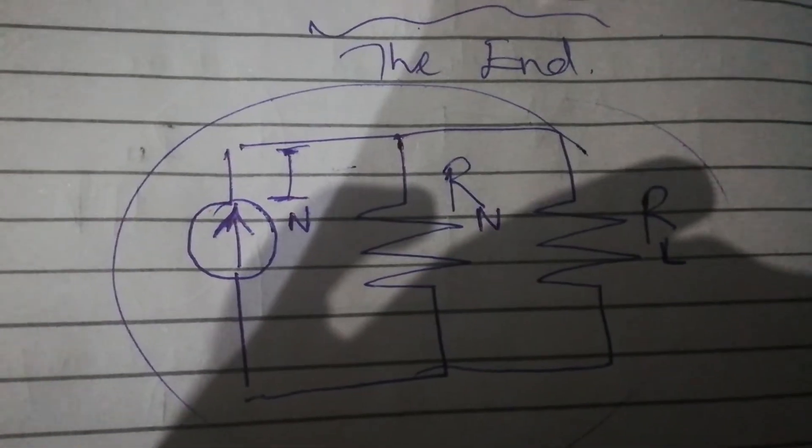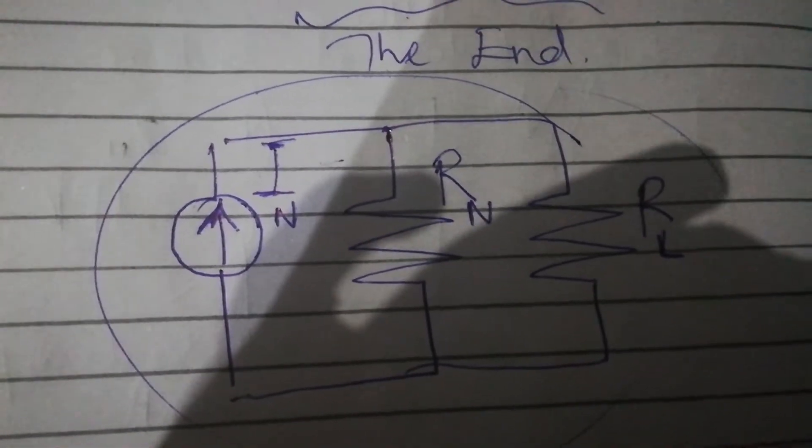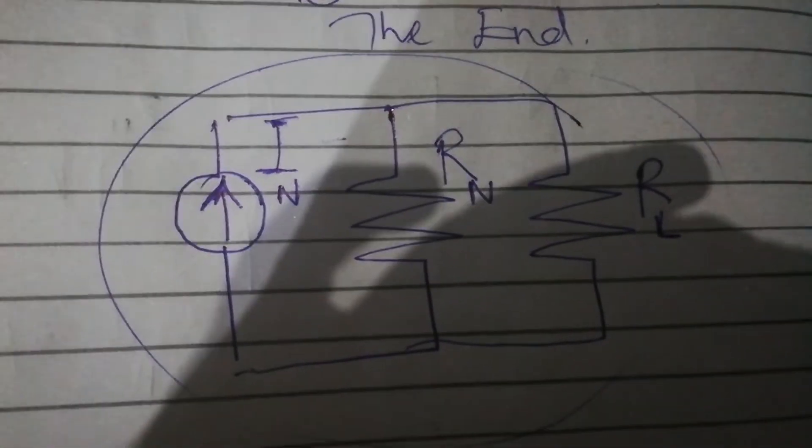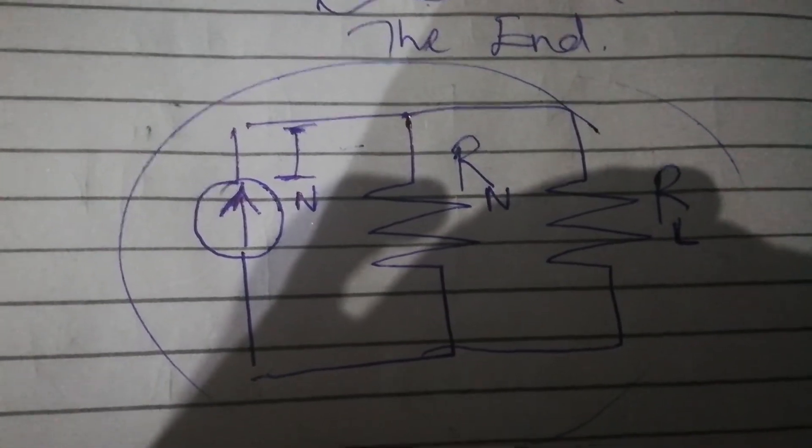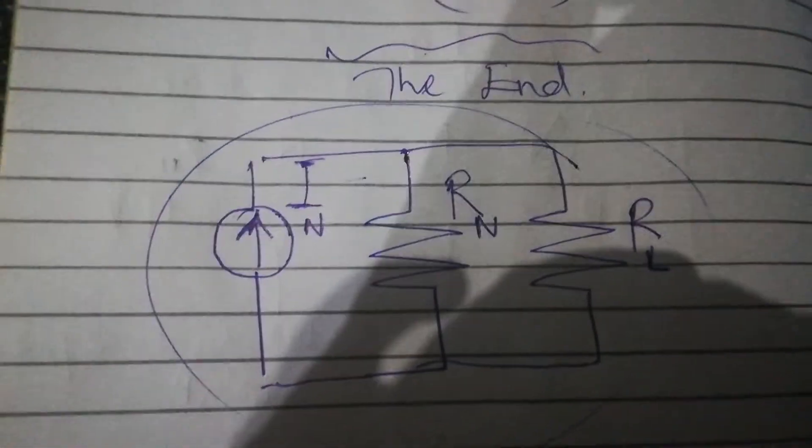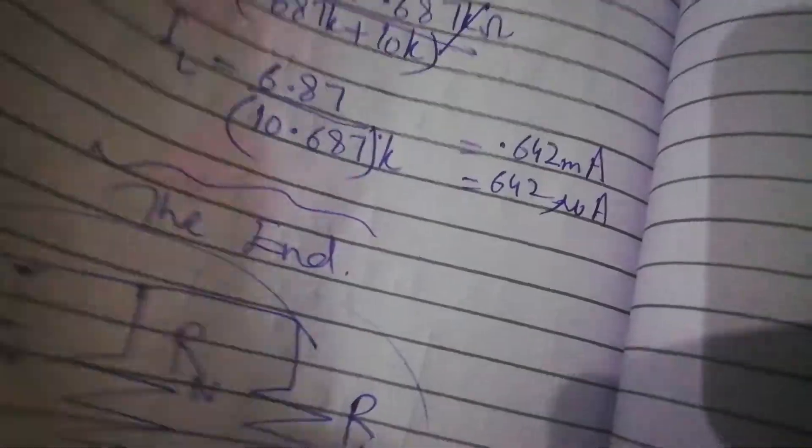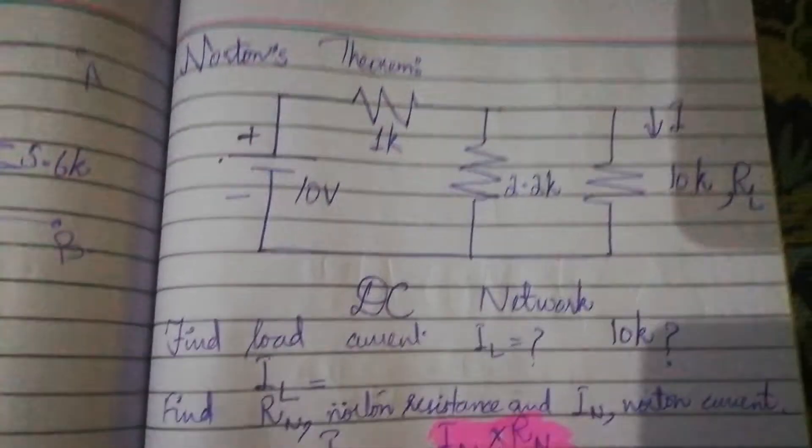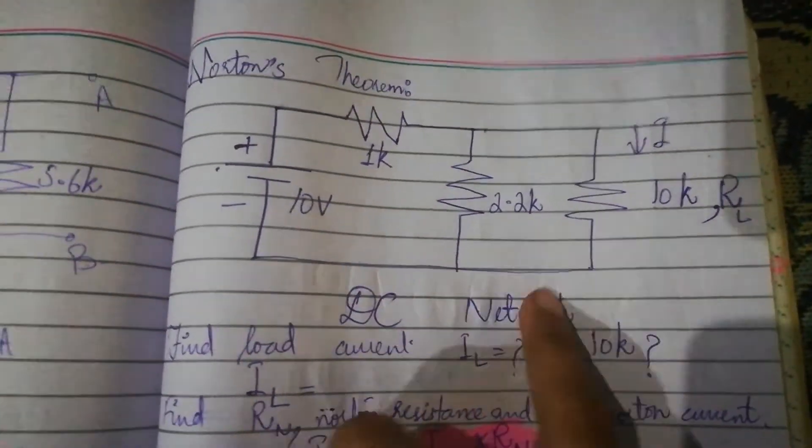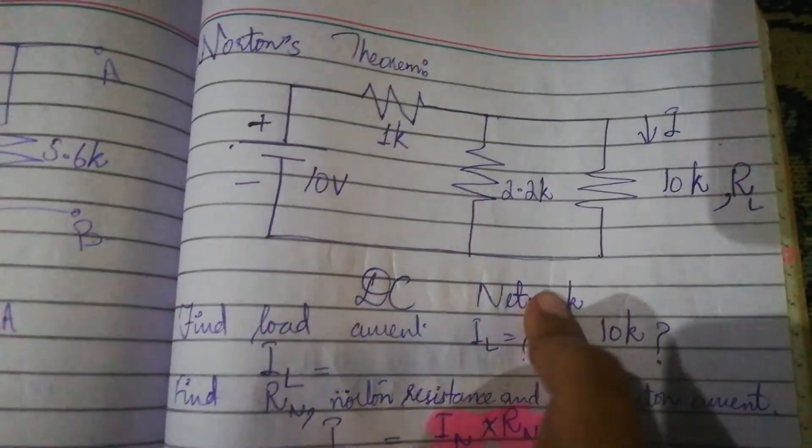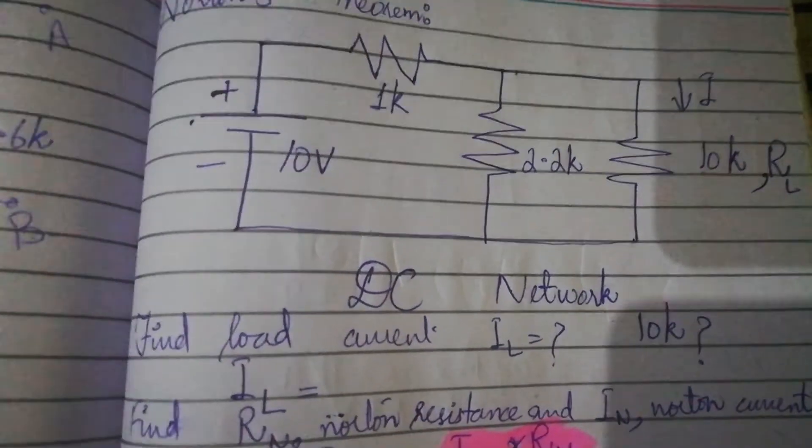Thevenin is very similar; the formula is exactly the same. Current and Norton is short, and Thevenin is open. This was a very brief concept about Norton's theorem. I will tell you the calculations. Thank you.